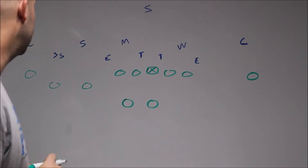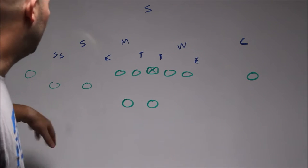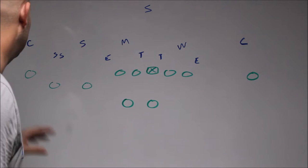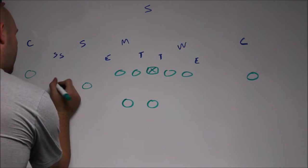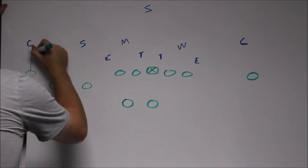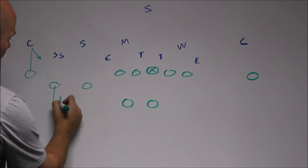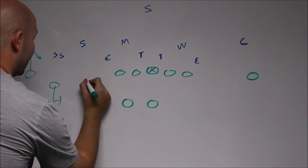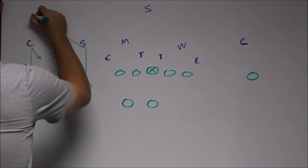Hey coaches, this is the smash concept out of three by one. We'll start with the play side receiver route combinations. Number one is going to run a hitch, number two is going to run a now screen, and number three is going to drive his route up the field and run a corner right over the top of the hitch.